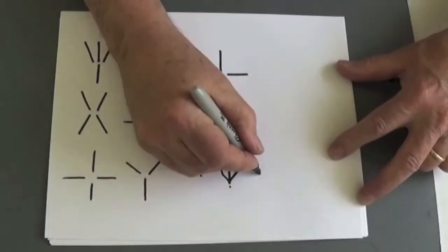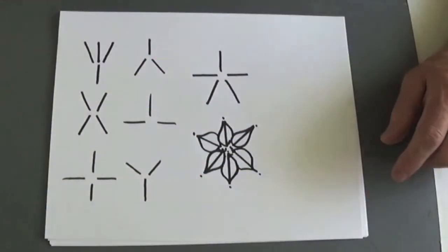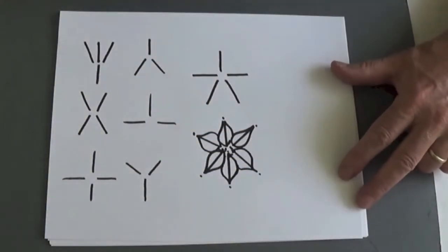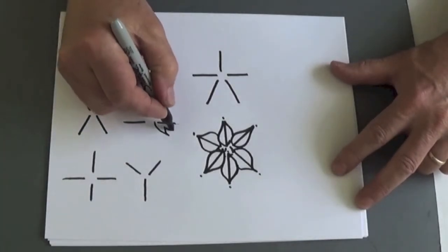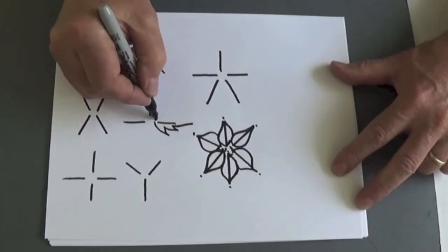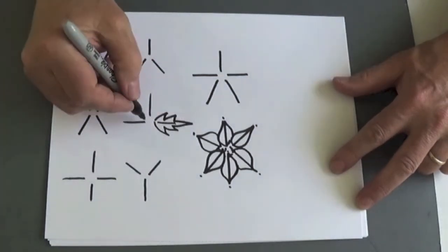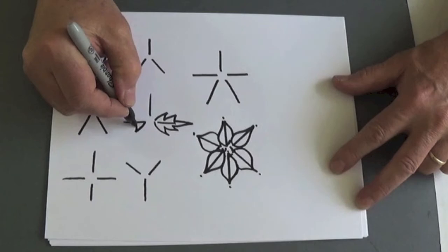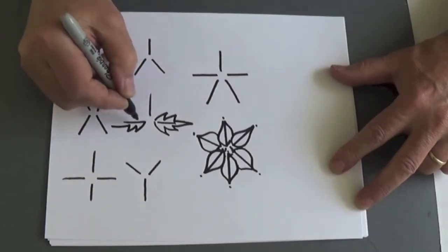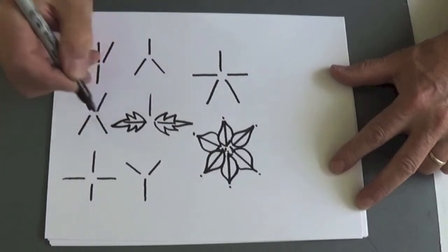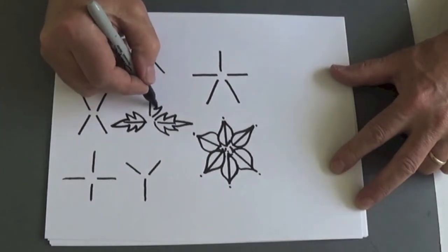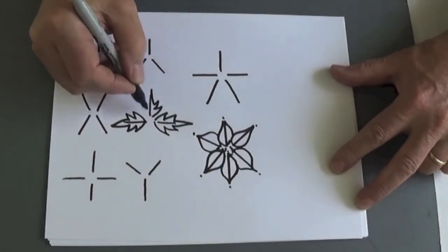So you're using geometric shapes which nature uses all the time. And let's add some zigzags on this one. It also works for leaves.